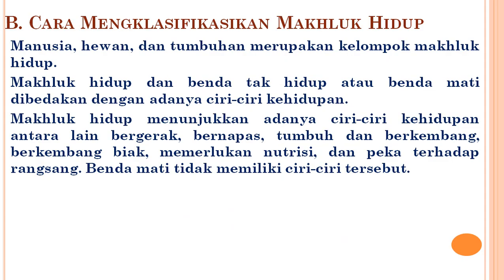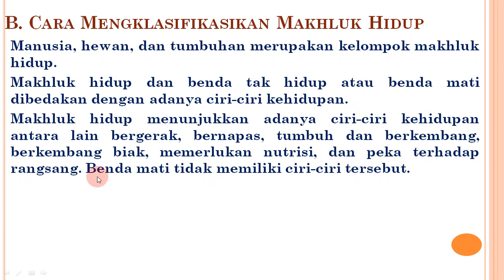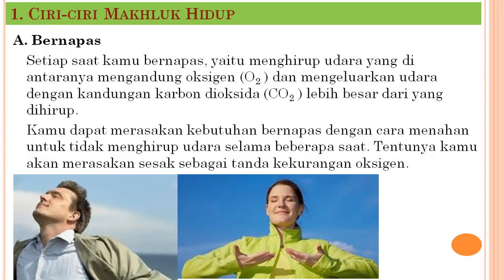Selanjutnya kita lanjutkan cara mengklasifikasikan makhluk hidup. Manusia, hewan, dan tumbuhan merupakan kelompok makhluk hidup. Makhluk hidup dan benda tak hidup dibedakan dengan adanya ciri kehidupan. Makhluk hidup menunjukkan ciri-ciri kehidupan antara lain bergerak, bernapas, tumbuh dan berkembang, berkembang biak, memerlukan nutrisi, dan peka terhadap rangsang. Benda mati tidak memiliki ciri-ciri tersebut.